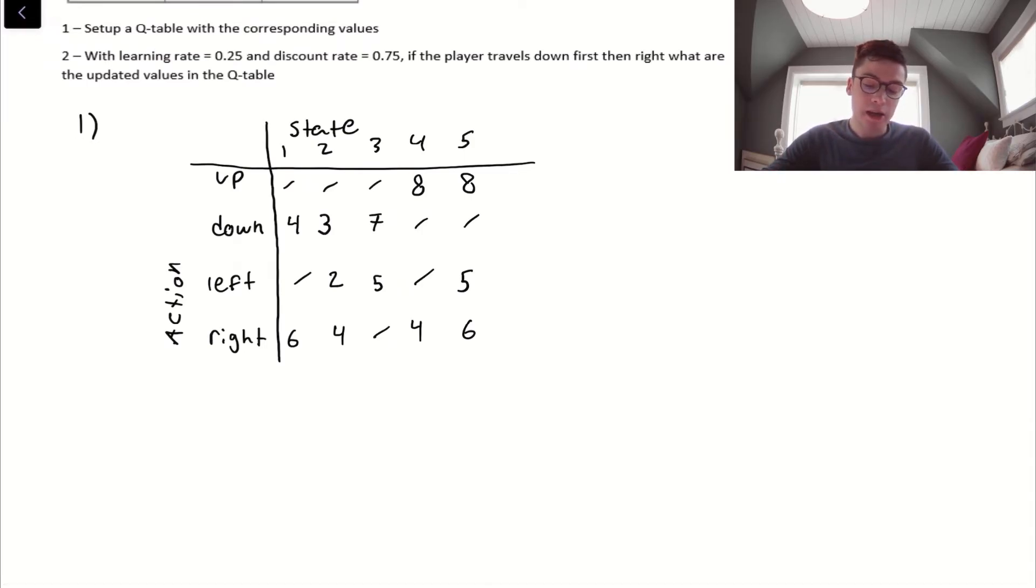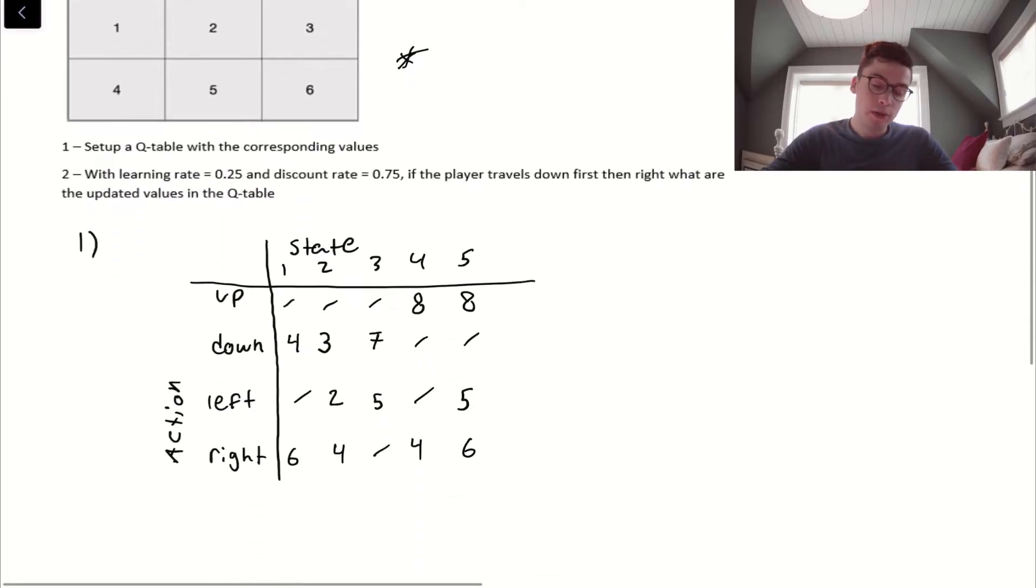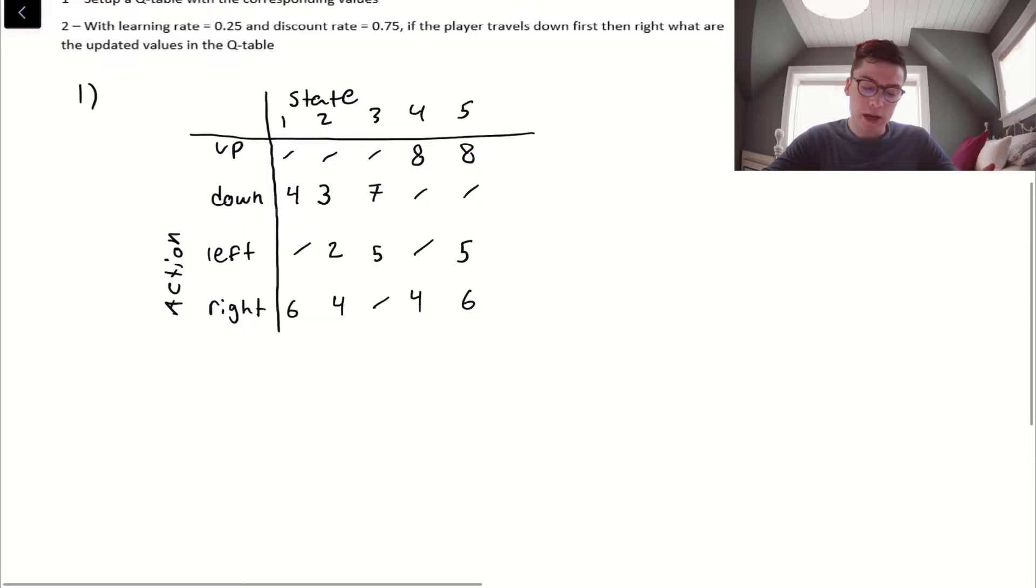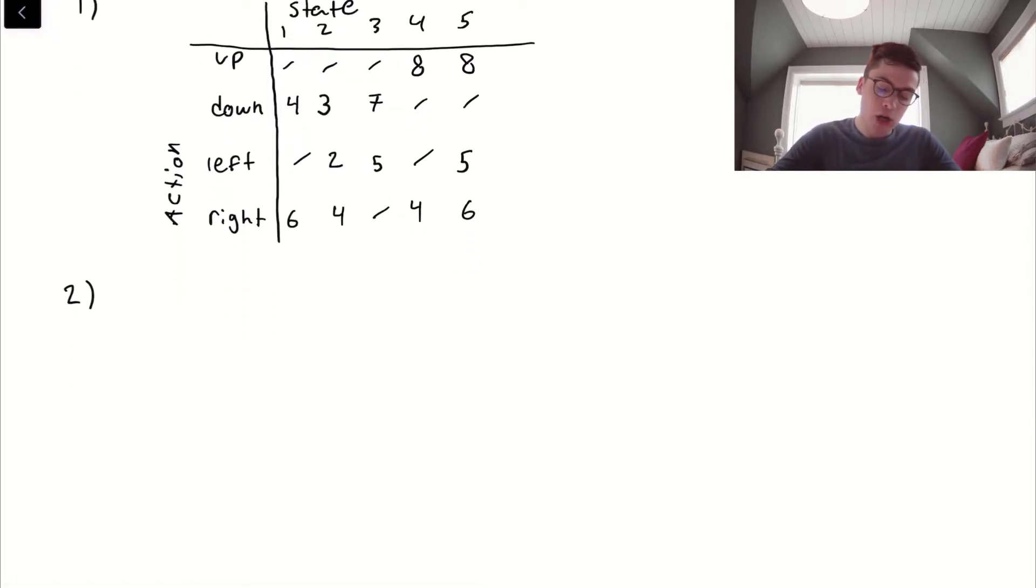The next question they're asking is to update the Q table after doing specific moves. In the question, it's asking us if the player travels down first, then right, update the Q table with the new values.